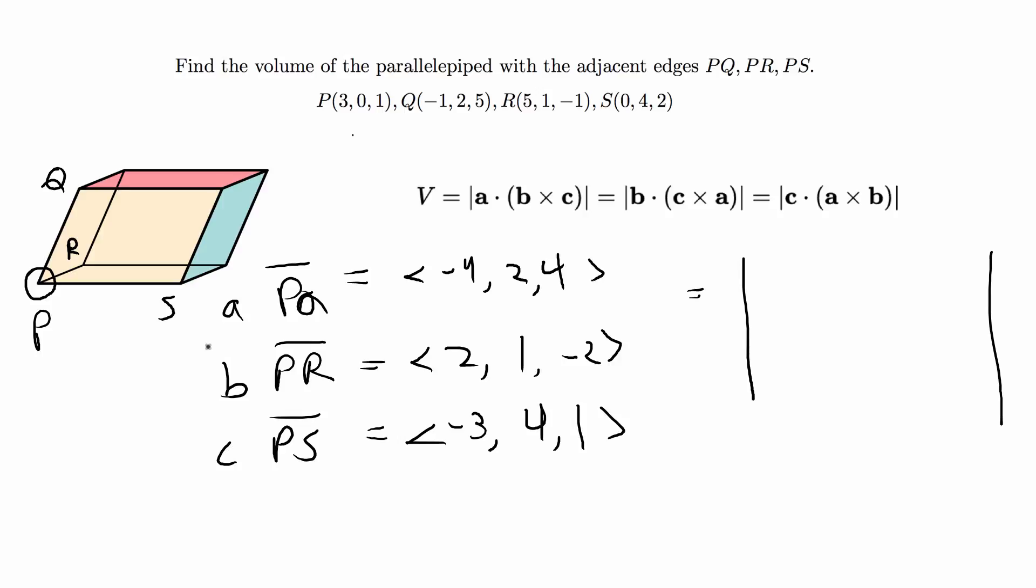So we have the a, b, and c vectors and now we can write the components in a 3 by 3 matrix and find the determinant. So that's going to be -4, 2, 4. 2, 1, -2. -3, 4, 1.